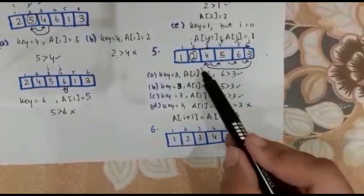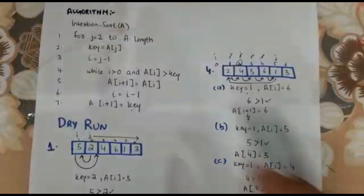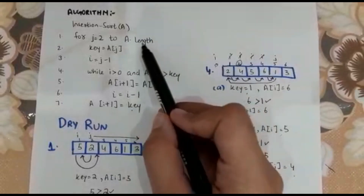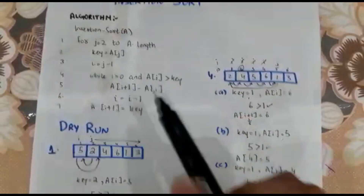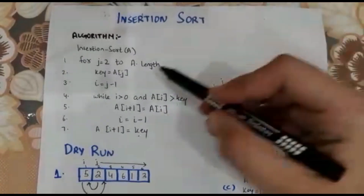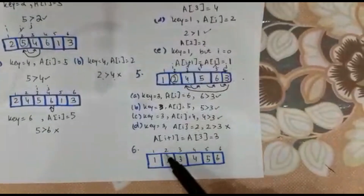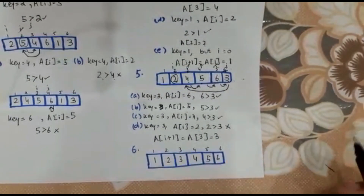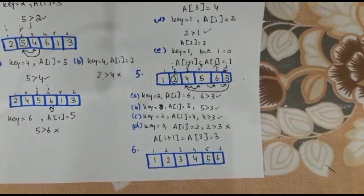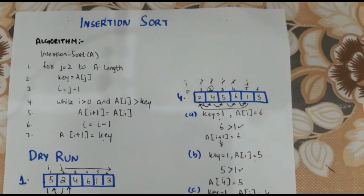Our new array is now 1, 2, 3, 4, 5, 6. In the last iteration, j is 6, key is 3. 6, 5, and 4 each shift right as they are greater than 3, and finally 3 is assigned its correct position. The for loop ends because j increments to 7, which exceeds the array length. Our array is finally sorted in ascending order. I hope you found the insertion sort technique interesting. We will discuss the next sorting technique next time. Allah hafiz.